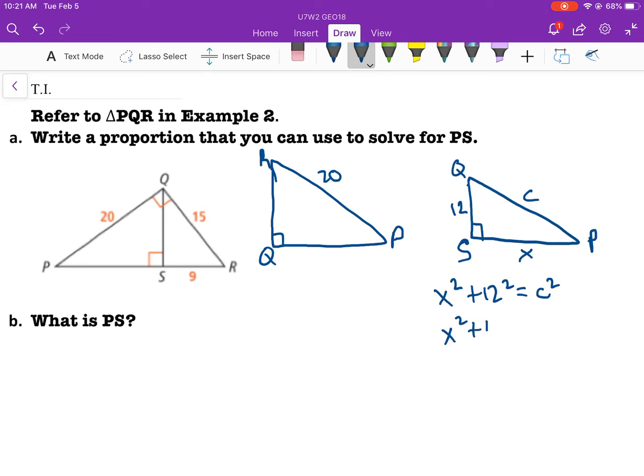X squared plus 144 is equal to C squared, and square root of X squared plus 144 is equal to C. And then we can say that 20 over square root of X squared plus 144 would be the ratio that we could then use to solve for PS.